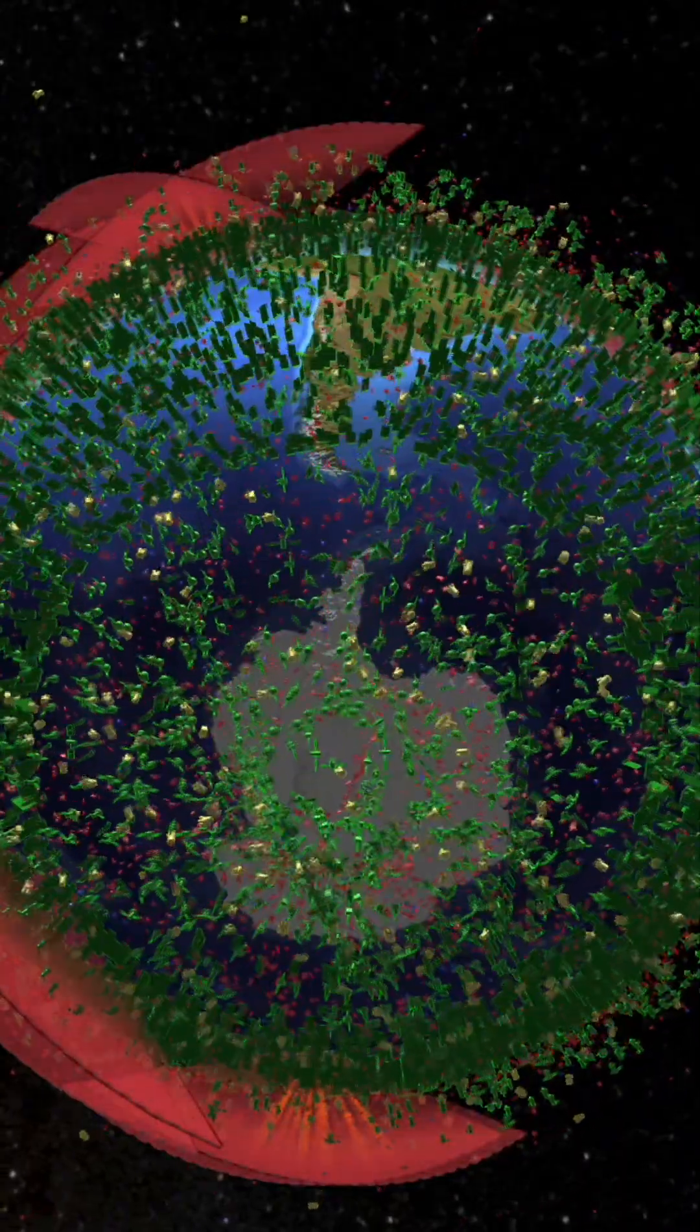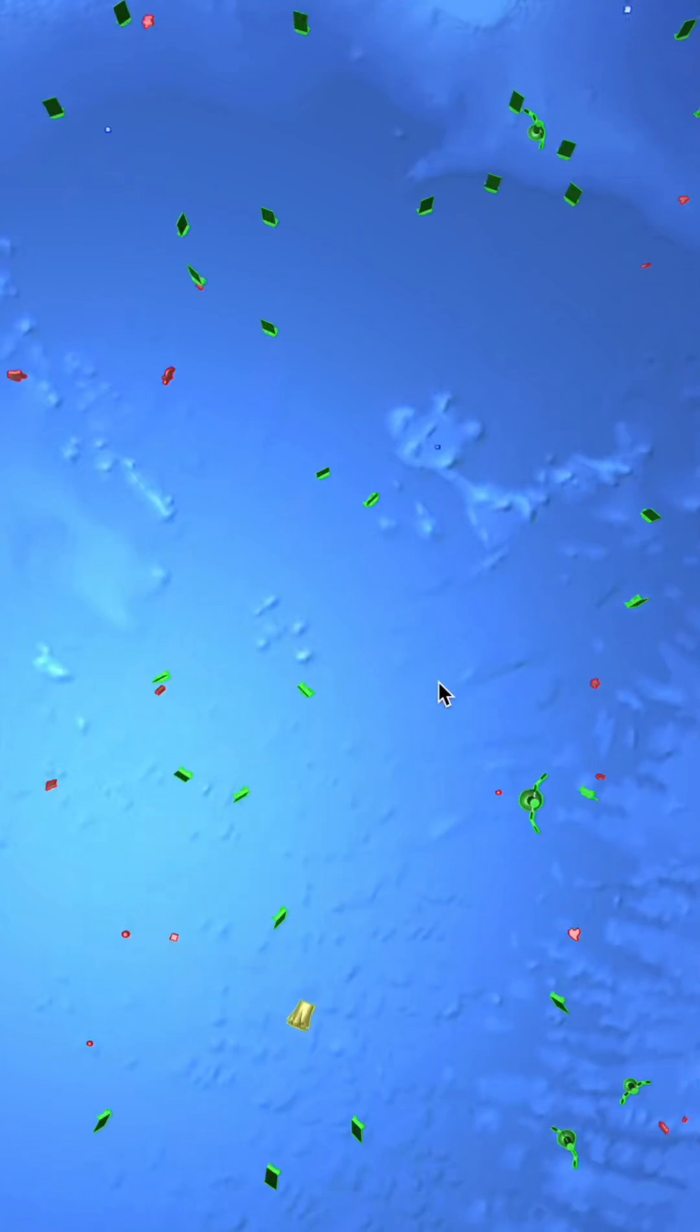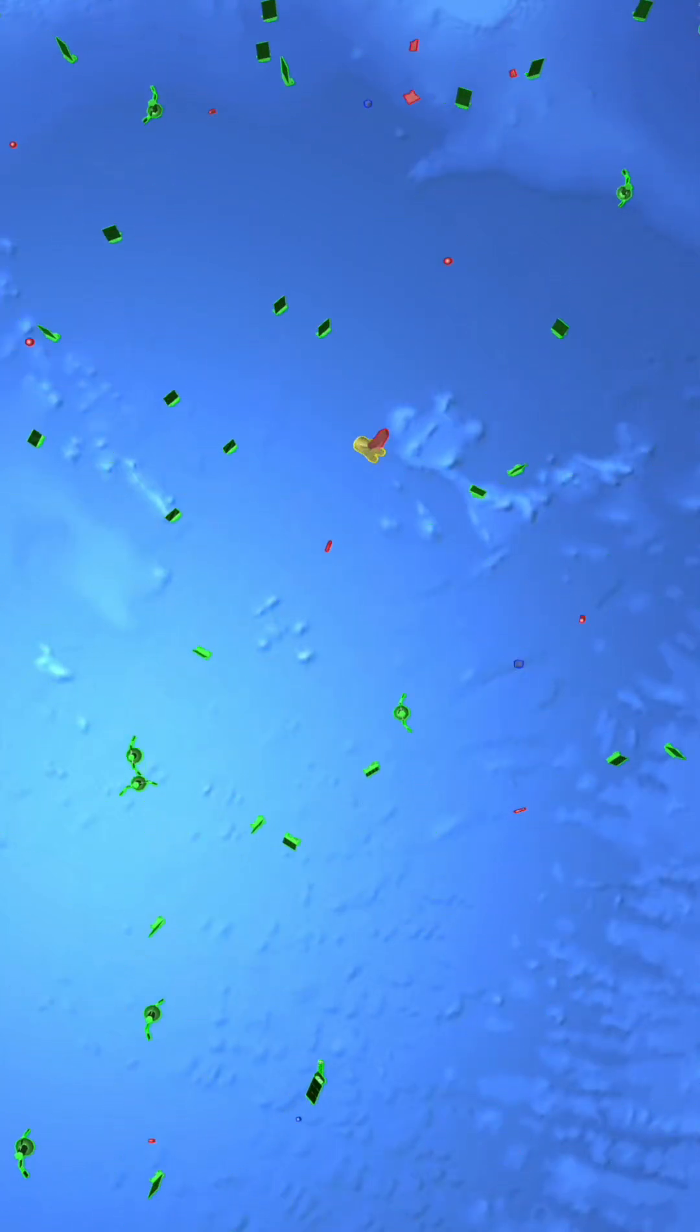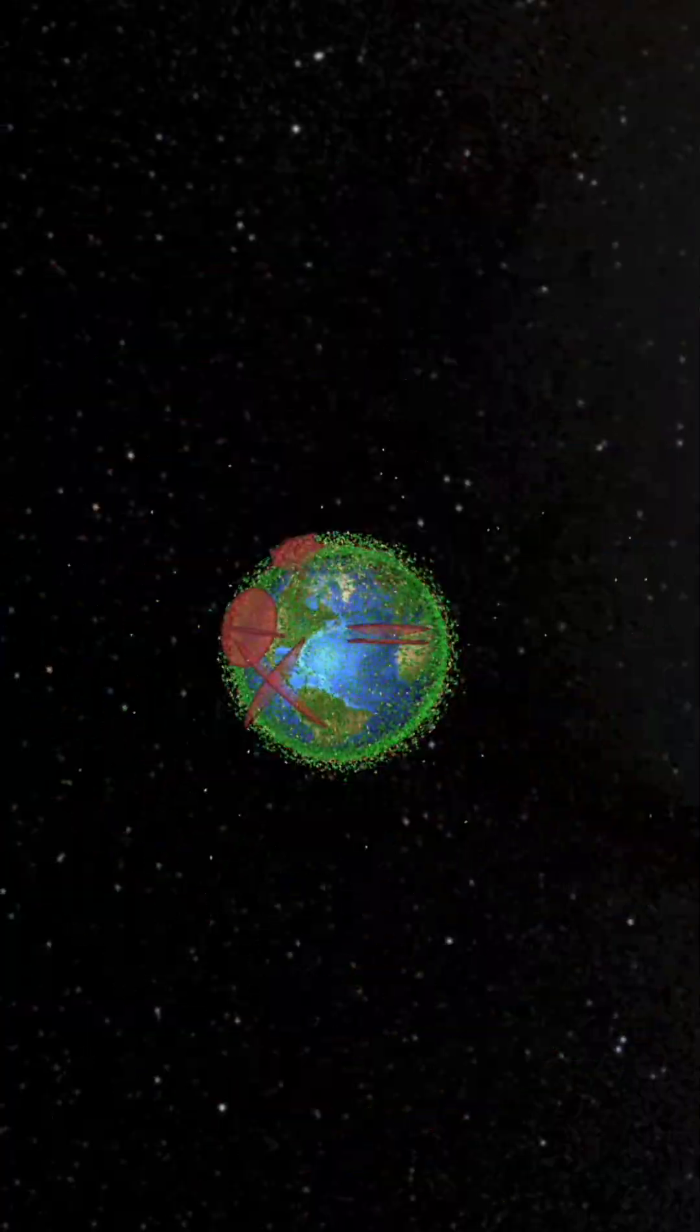So how do we navigate this? This is LeoLabs. They've built a global network of advanced radars that act as a 24-7 watchtower for space, creating a living, breathing map of everything in orbit.